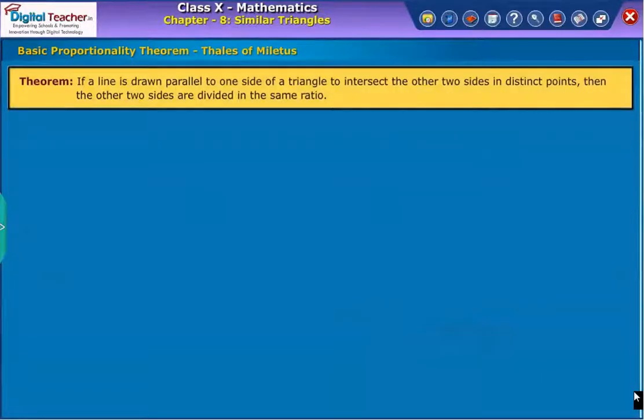Basic proportionality theorem states that if a line is drawn parallel to one side of a triangle to intersect the other two sides in distinct points, then the other two sides are divided in the same ratio.